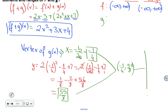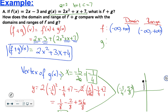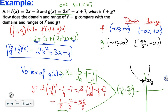Since the vertex is at (negative 1/4, 55/8) and the value of a is positive, the parabola opens upward. The domain of g is negative infinity to positive infinity. The range of g starts at 55 over 8, which is included, and goes to positive infinity. So the range of g is [55/8, positive infinity).